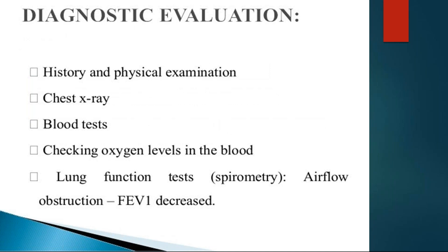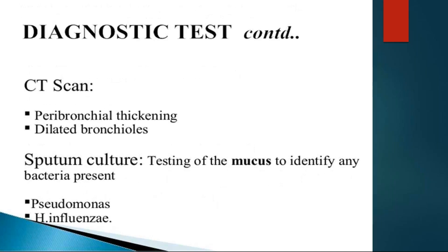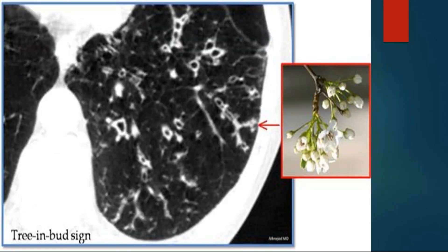Coming to diagnostic evaluation: history and physical examination, chest X-ray, blood tests, oxygen level assessment, and lung function tests like spirometry. CT scan shows peribronchial thickening and dilated bronchi; sputum is sent for culture and sensitivity for common organisms like Pseudomonas and Haemophilus influenzae. The CT picture shows tree-in-bud appearance, which occurs due to obstructed mucus in dilated airways.